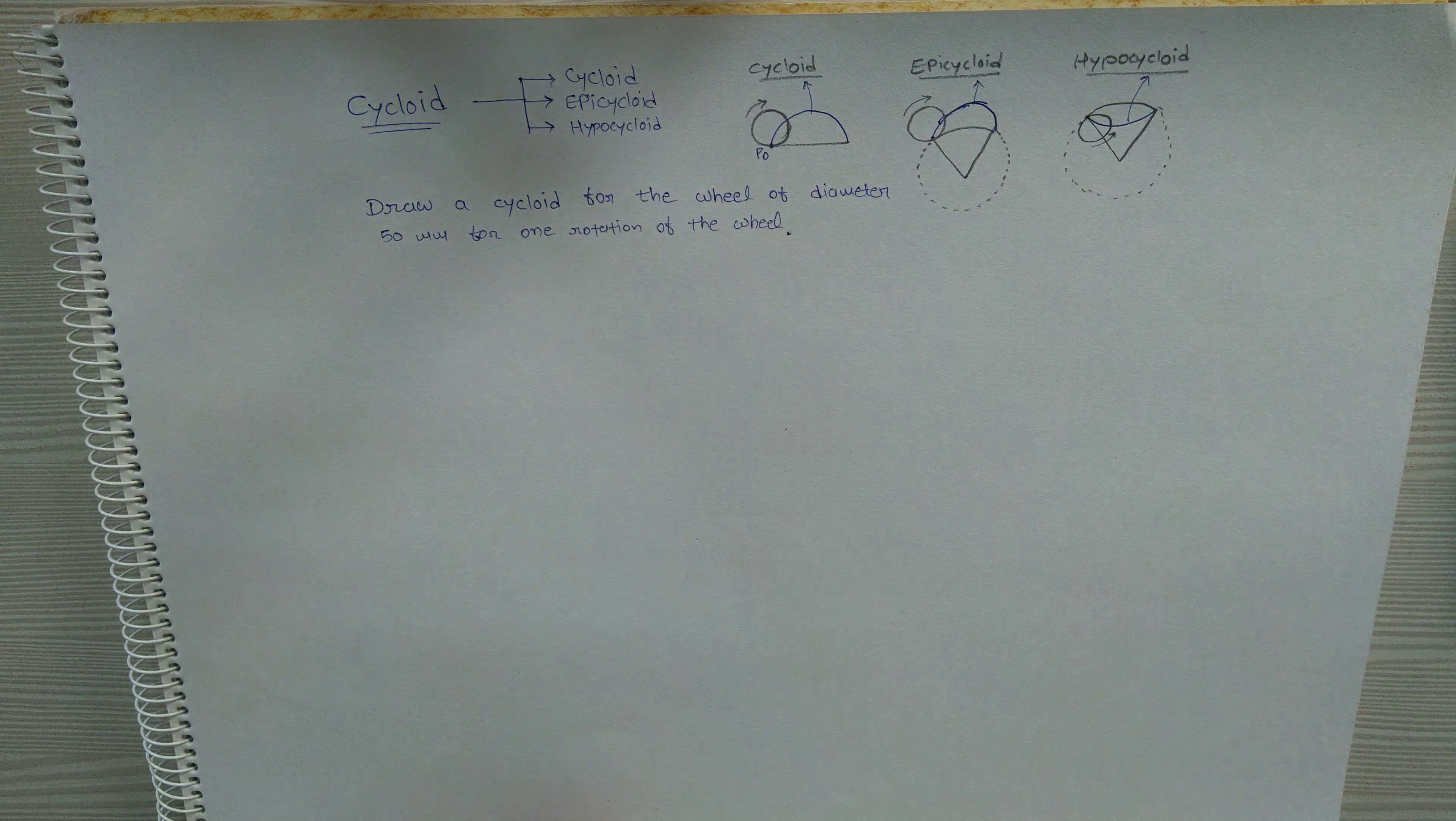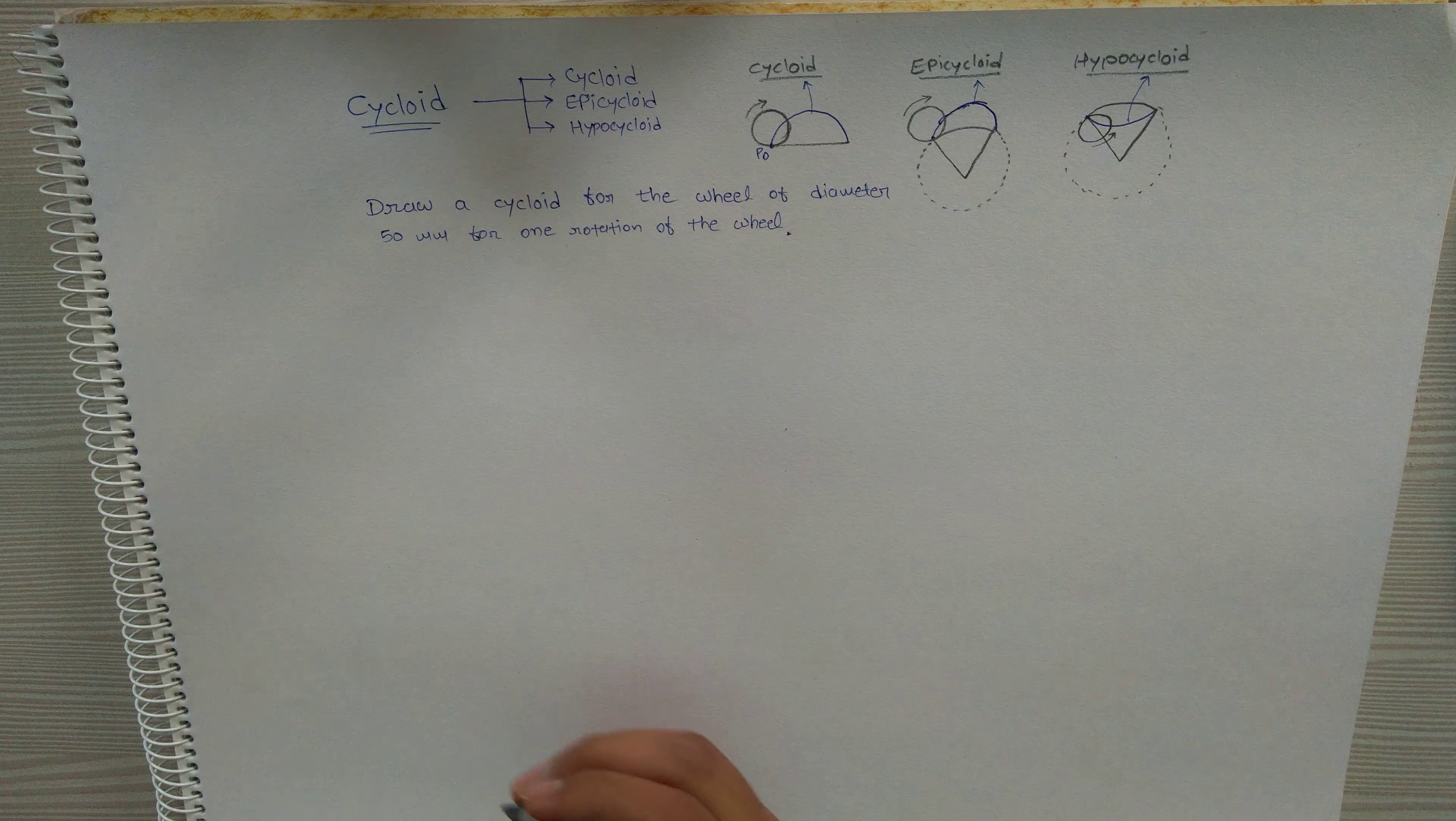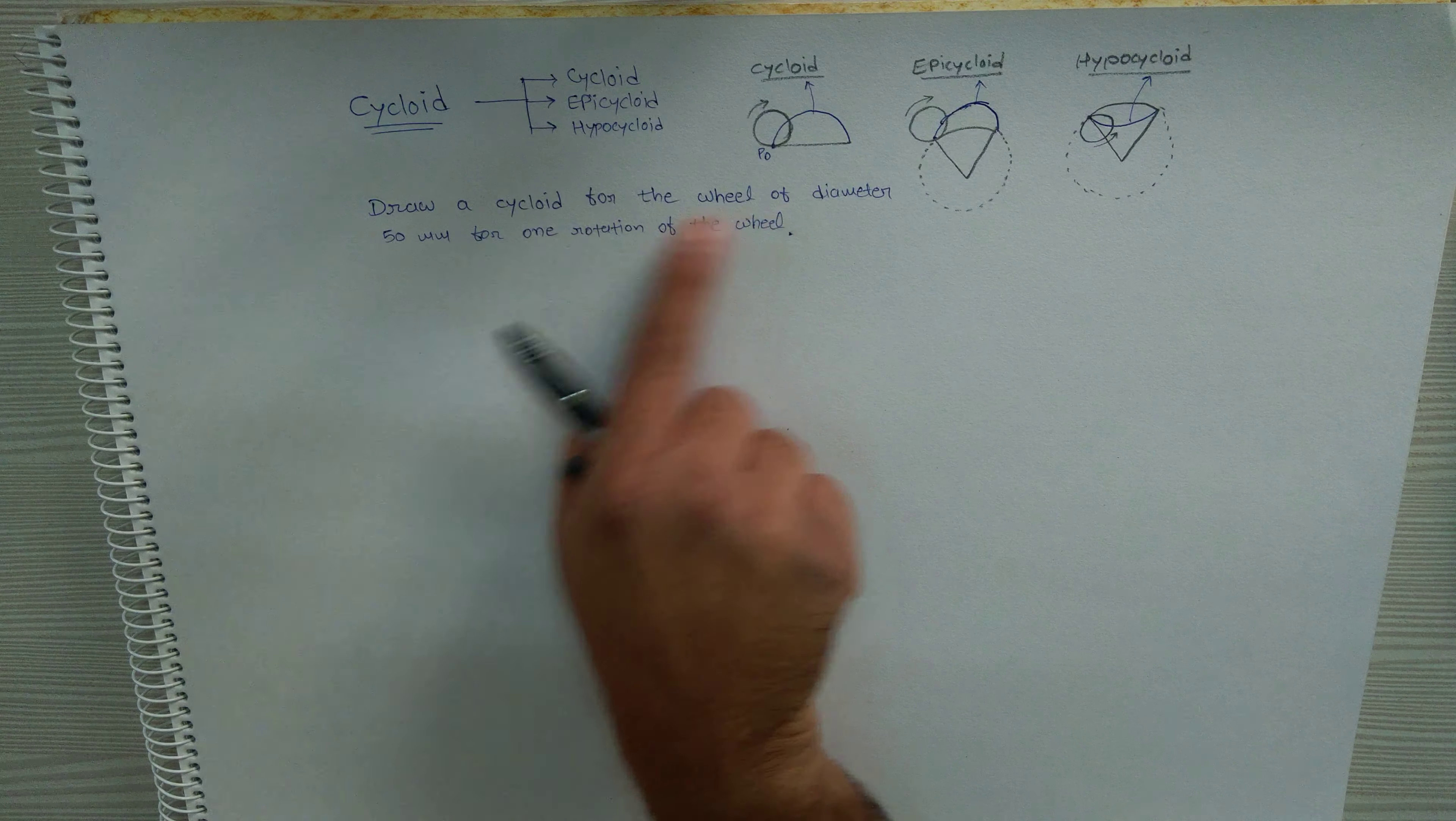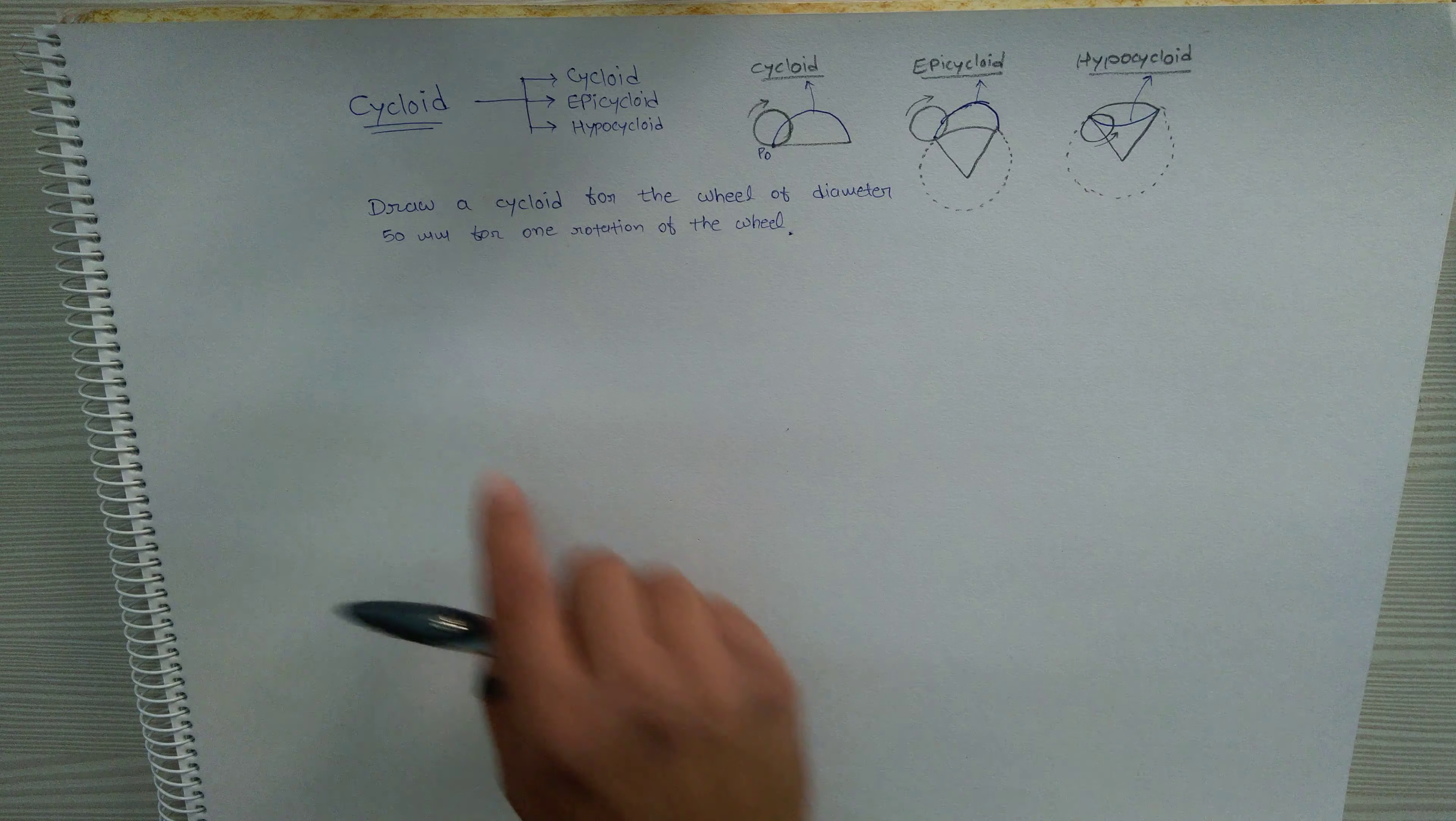Hello friends, in this video I am going to explain the procedure to draw a cycloid. For that, you need to draw a cycloid for a 50 mm diameter circle or wheel.